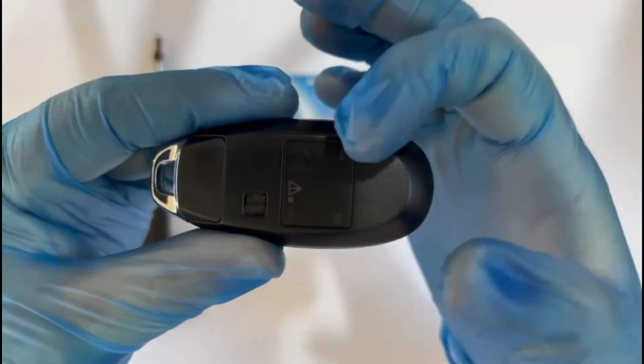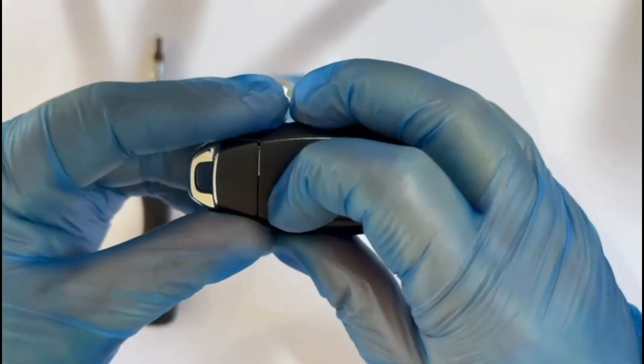To release the key from the key fob, simply switch the lever to the left which will then release the key.